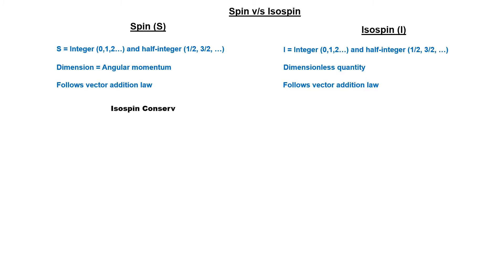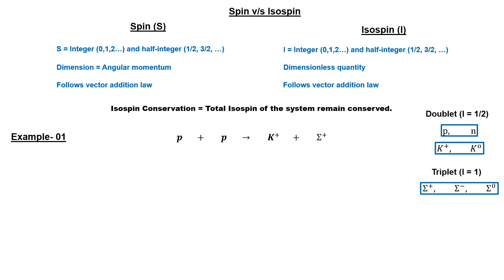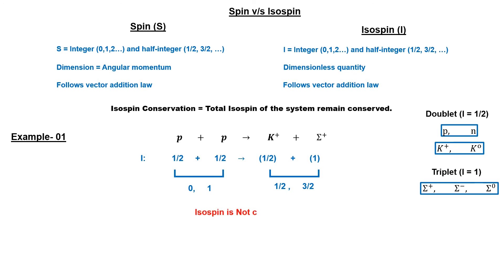According to isospin conservation, the total isospin must remain conserved in a nuclear reaction. Consider two protons decaying into a kaon and a sigma baryon. Both protons and the kaon are members of the doublet group with isospin 1/2, while the sigma is a member of the triplet group with isospin 1. The possible total isospin of the two parent particles can be 0 or 1, while the possible total isospin of the daughter particles can be 1/2 or 3/2. Since no total isospin of the parent particles matches that of the daughter particles, isospin is not conserved in this decay reaction.